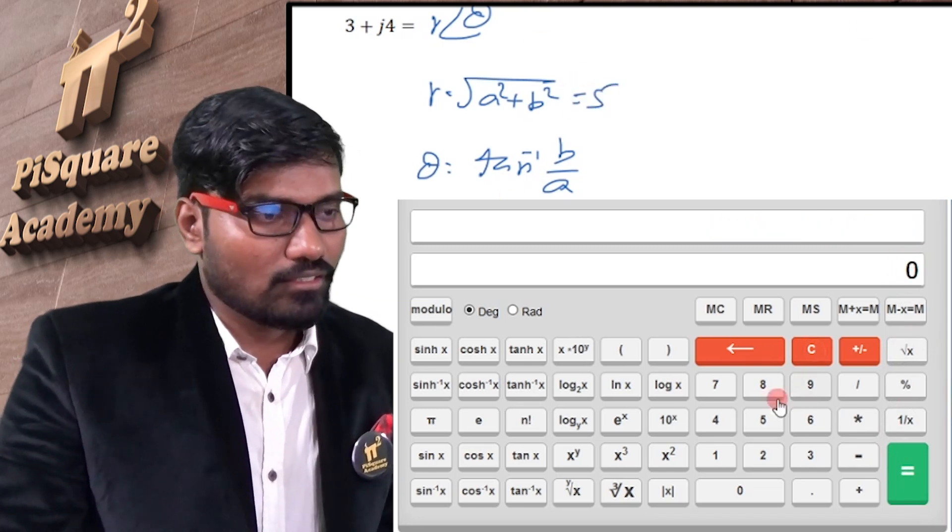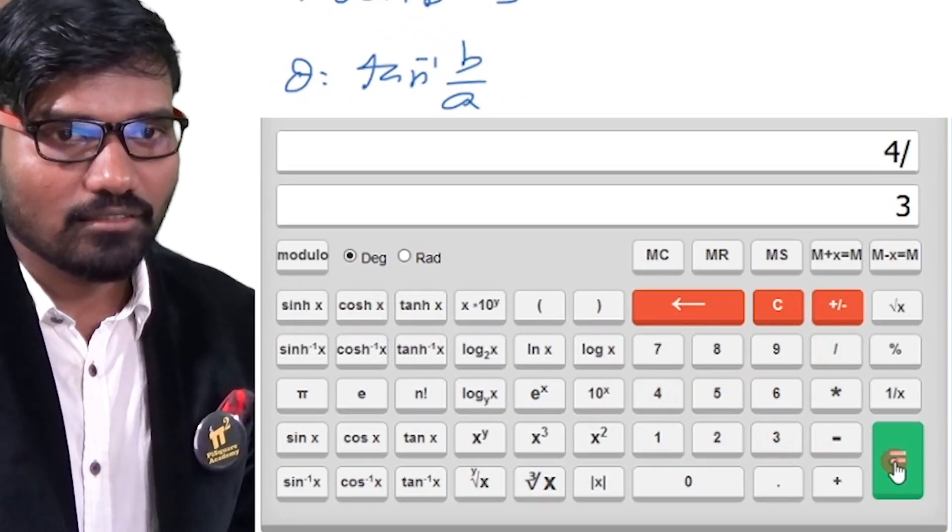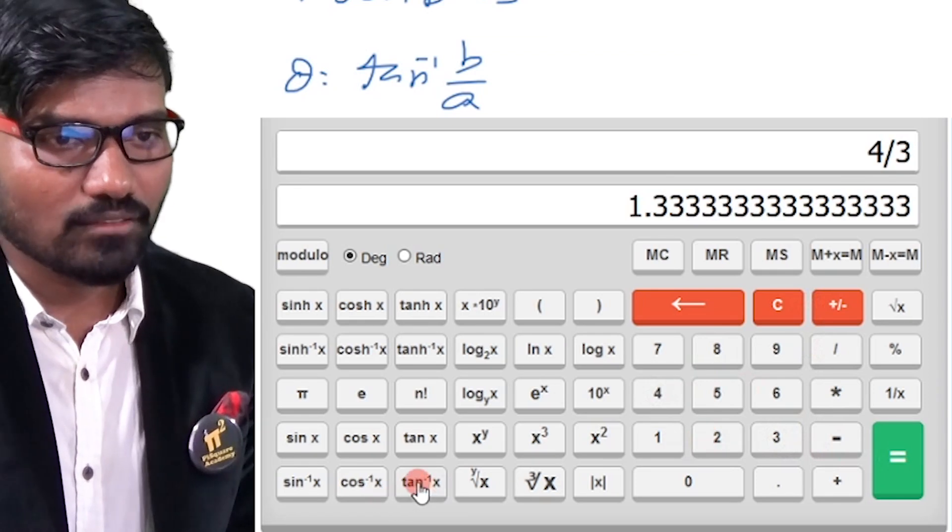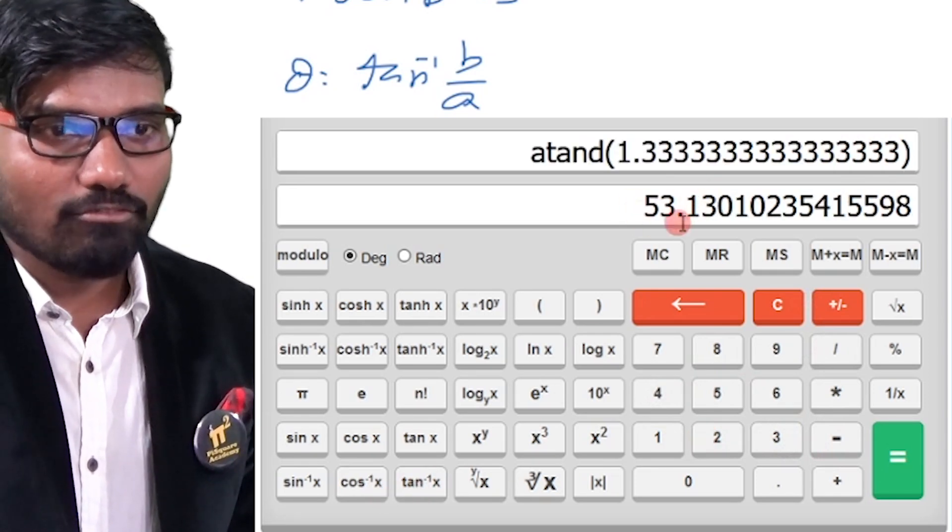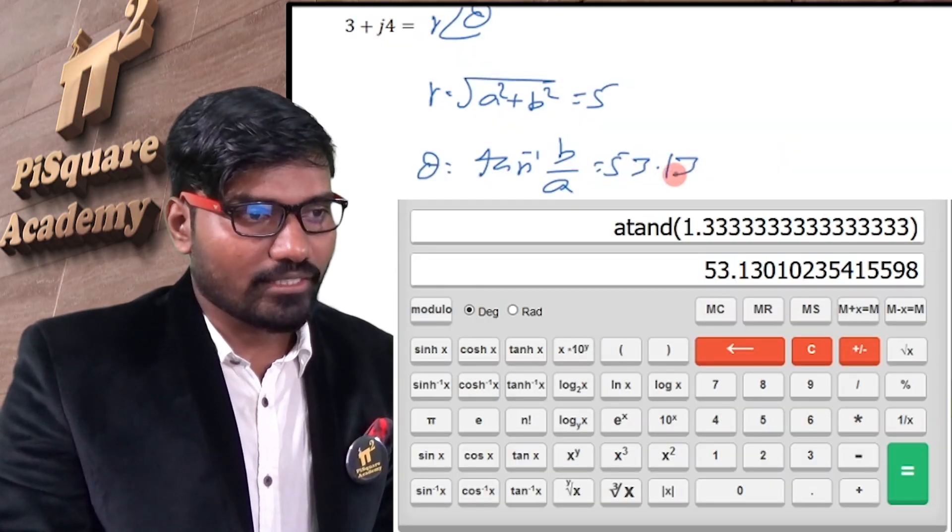Let's find theta, b by a, b is 4, 4 by 3, then we go for tan inverse of it. So this is the angle, 53.13 degrees. So theta is 53.13 degrees.